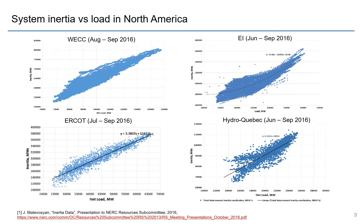This slide shows system inertia versus load in North America — covering the western interconnection, the eastern interconnection, Texas, and Hydro-Quebec.